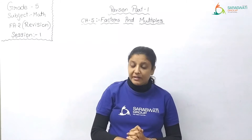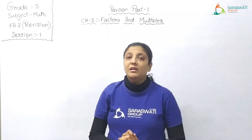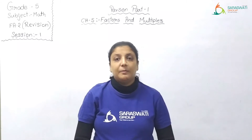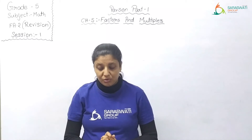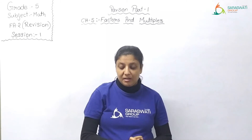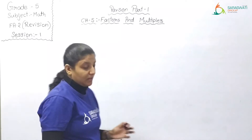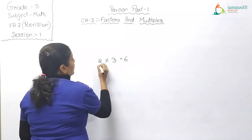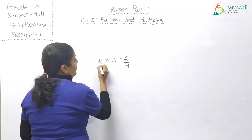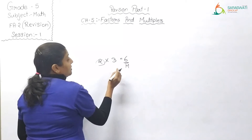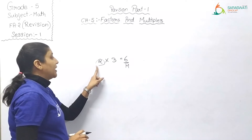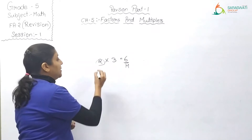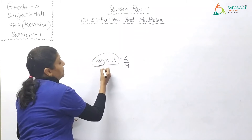Let us start today's revision with chapter number 5: Factors and Multiples. Factors of a number are those which divide the number exactly. For example, 2 into 3 — 2 threes are 6. So 6 is a multiple of 2 and 3, and 2 and 3 are factors of 6.